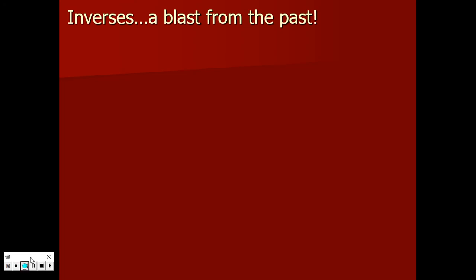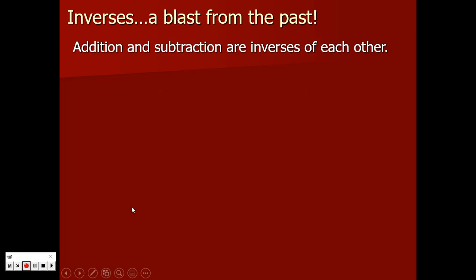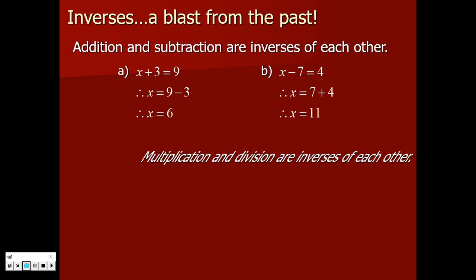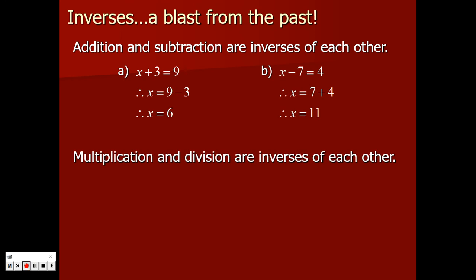When we want to solve an equation that had addition in it — say x plus 3 — we moved the adding 3 over to the other side and it became subtracting 3, because subtraction is the inverse of adding. Multiplication and division are inverses of each other: when you go 4 times x equals 12, you divide by 4. And if you had x divided by 5, you multiply by 5 to undo it.